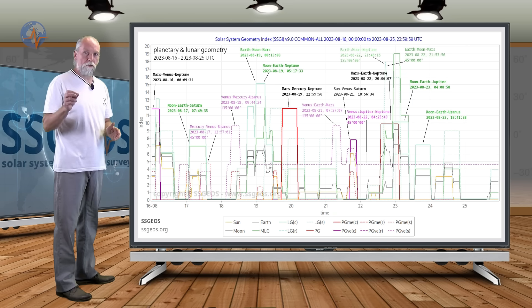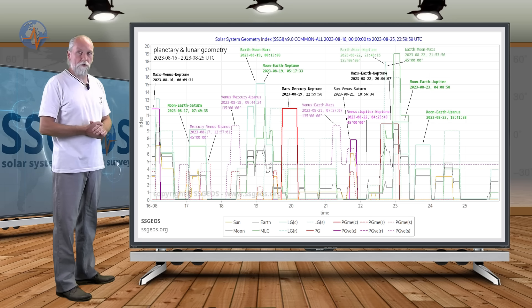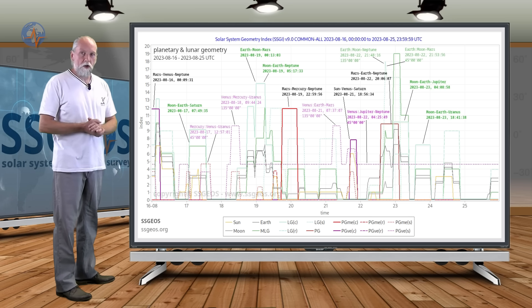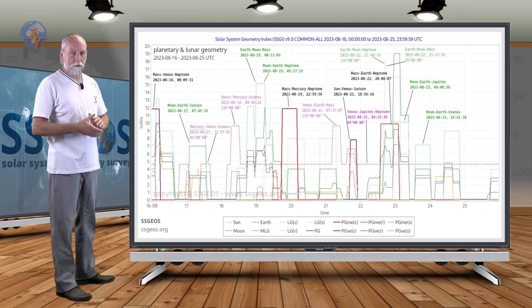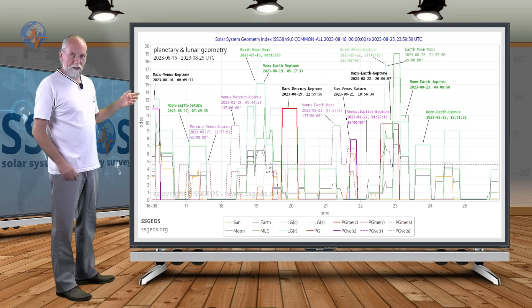Especially when Earth gets between Mars and Neptune, that is critical. We have critical lunar geometry before then and also after that planetary conjunction. So, let's get into that.